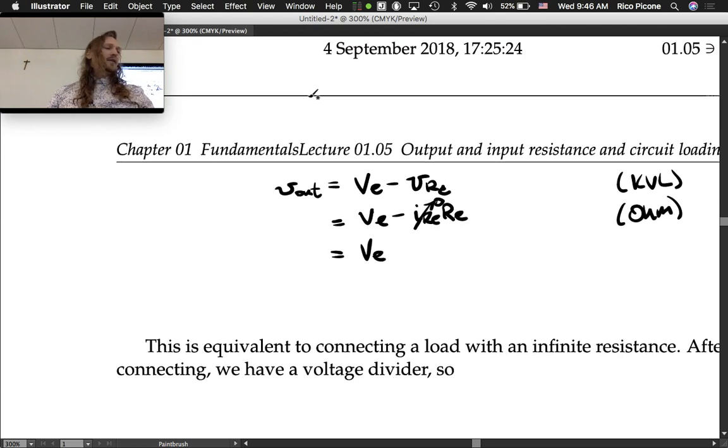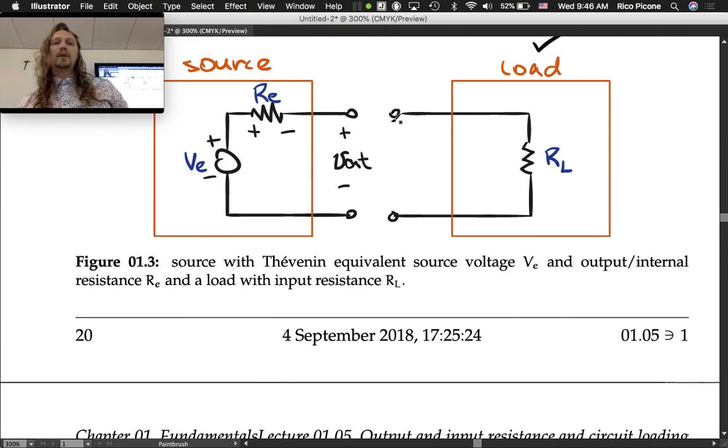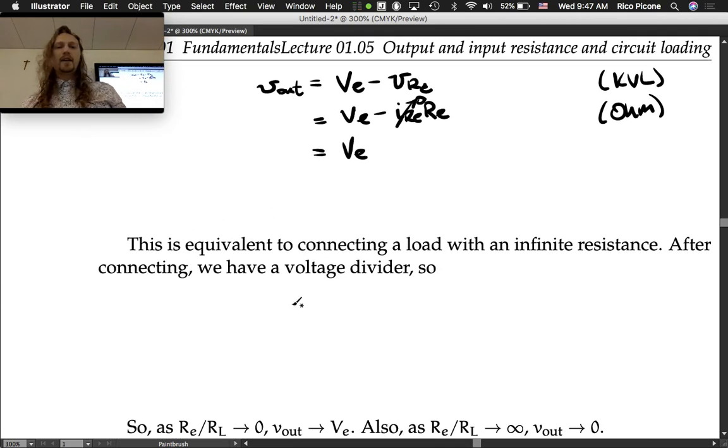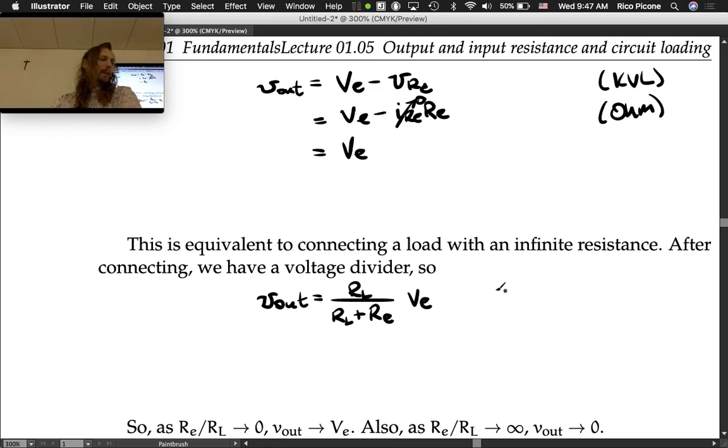After connecting, we have a voltage divider, right? Once you connect these up, bring them in, connect these, then we have a voltage divider - one resistor, two resistors. So v_out is equal to the load resistance divided by the load resistance plus the source resistance R_e, times the input which is v_e in this case.